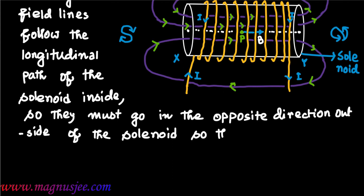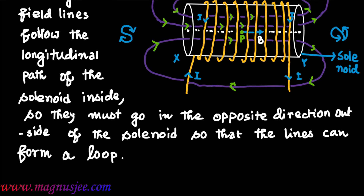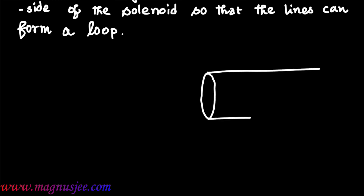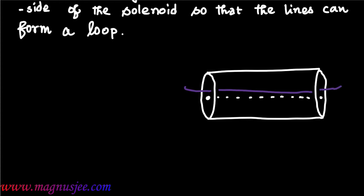They must go in the opposite direction outside the solenoid so that the lines can form a loop. We can draw the diagram of the solenoid again — this is the cylindrical core, this is the axis of the solenoid, and this is a closed loop or closed magnetic field line.